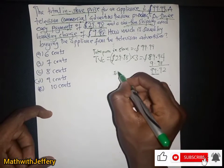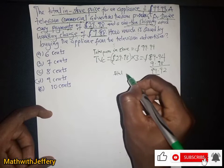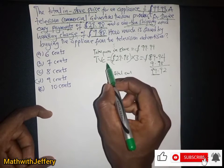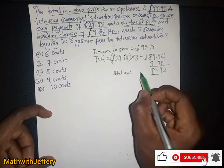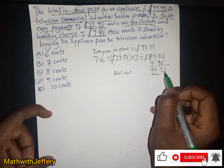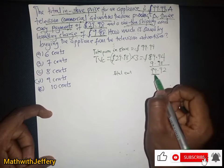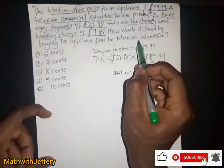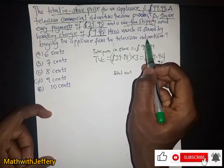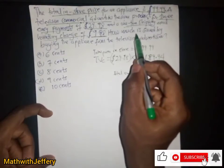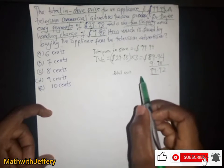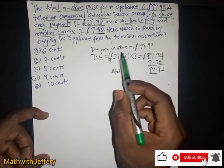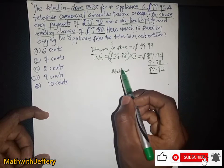So $99.92 will be the total amount the TV commercial is going to charge. Now the question asks how much is saved by buying the appliance from the television advertiser. If we are buying it for $99.99 in-store versus $99.92 from TV...